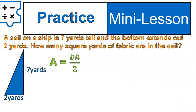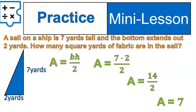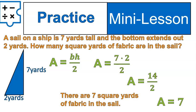Now let's look at a word problem. A sail on a ship is seven yards tall and the bottom extends out two yards. How many square yards of fabric are in the sail? There's the equation. Go ahead and try that one out on your own. I've even drawn a picture for you. When you substitute, did you put seven and two into this formula? Seven times two is fourteen and fourteen divided by two is seven. That tells us that there are seven square yards of fabric in the sail. There's our ship. Yeah. All right. Take it for a ride.